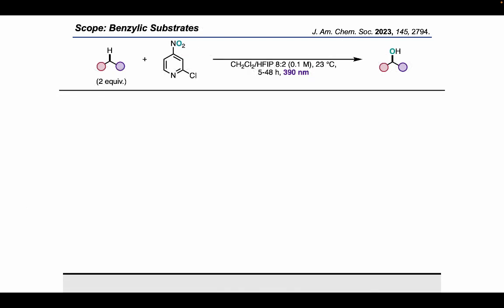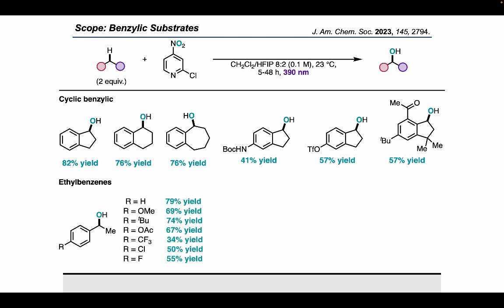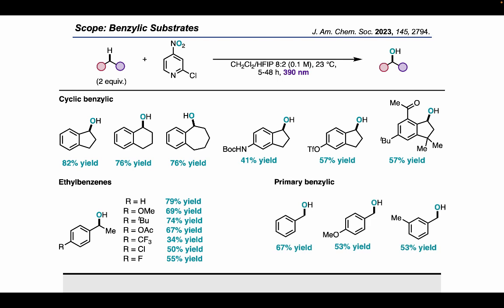With optimized conditions in hand, we started investigations into the scope of the transformation. Cyclic substrates of various ring sizes were efficiently hydroxylated in moderate to good yields. Ethylbenzenes also performed well, with electron-rich and neutral ethylbenzenes being hydroxylated in good yields with little to no formation of the corresponding acetophenones. Electron-poor and halogenated substrates were also hydroxylated, albeit in lower yields. Primary benzylic substrates also performed well but required higher amounts of HFIP to suppress over-oxidation to the aldehydes. Interestingly, when multiple equivalent sites were present, only the singly hydroxylated product was detected, offering complementary reactivity to other hydroxylation methods which produced the doubly hydroxylated product.